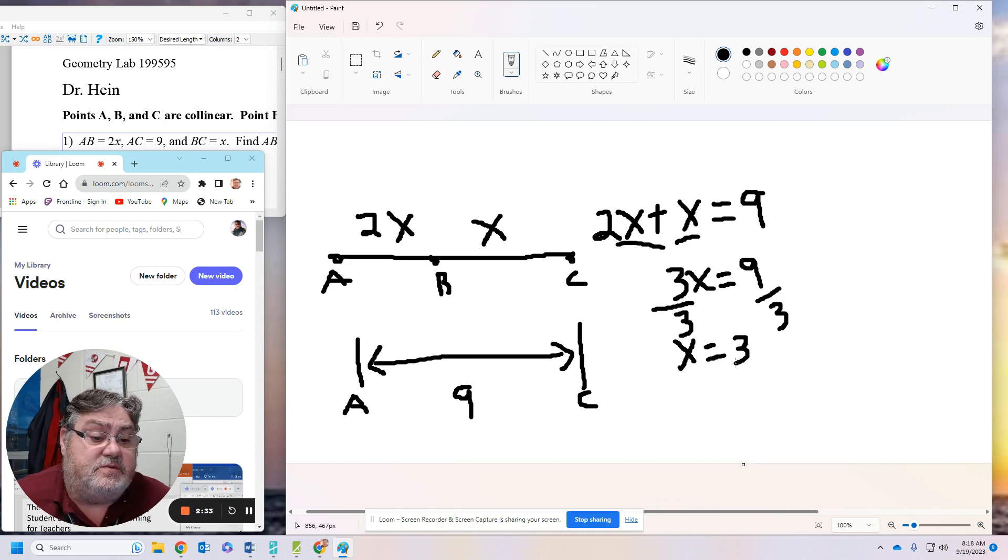Now, I know X equals 3. It's not my answer, I'm just going to circle it. Now, I'm going to take my information. I'm going to go back to the question where it says find line segment AB. So I only want this portion of the line from A to B. Notice that it's 2X.